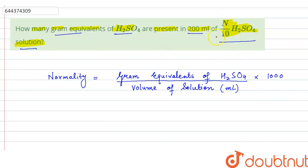Now, in solution, we are given the normality of H2SO4 that is 1 by 10. So, normality is given 1 by 10.